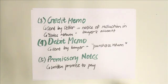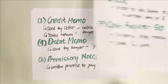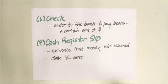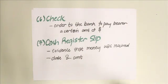We have promissory notes, which are basically a written promise to pay. Then there is a check, which is an order to the bank signed by the maker to pay the bearer a certain amount of money. Lastly, we have the cash register slip, which is evidence that money was received — this document has the date of receipt as well as the amount.